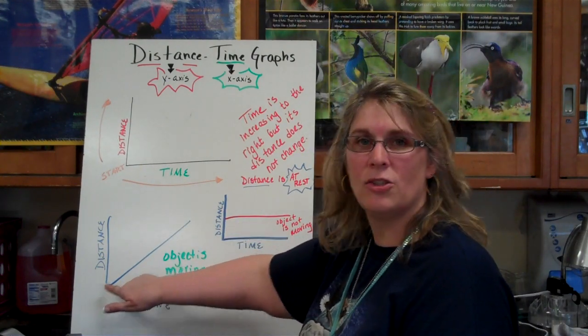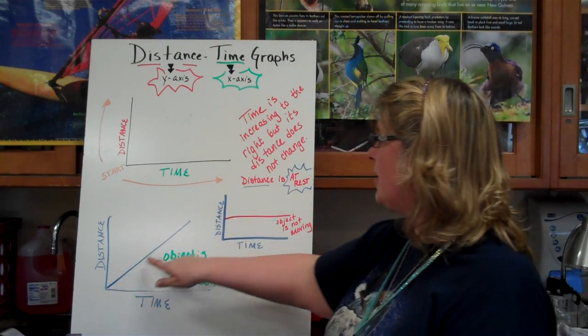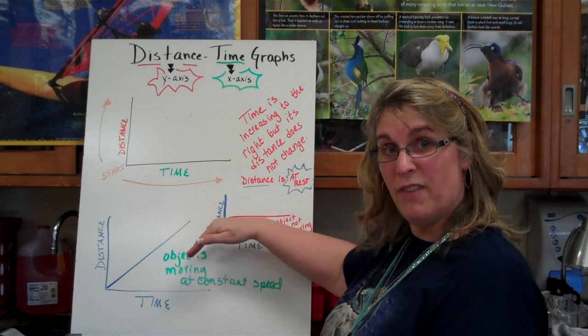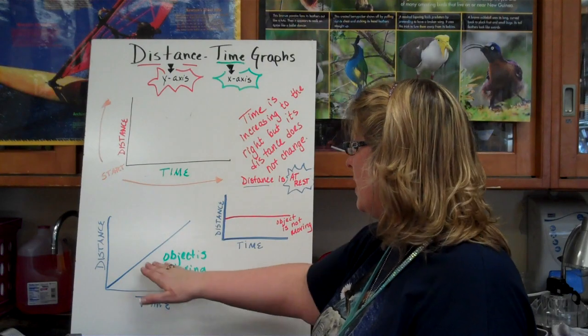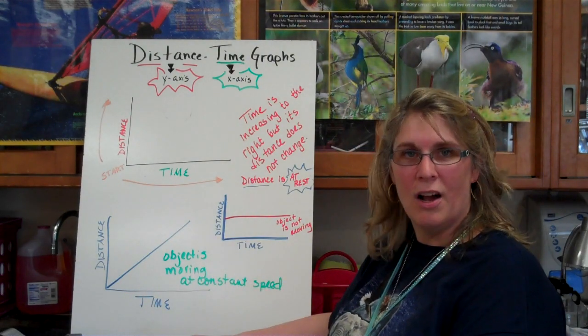When you look at something like this that has a straight line up from the start point, and it just goes like at a 45 degree angle is about what this one does, tells you that the object is moving at a constant speed.